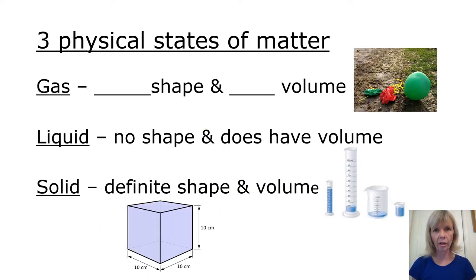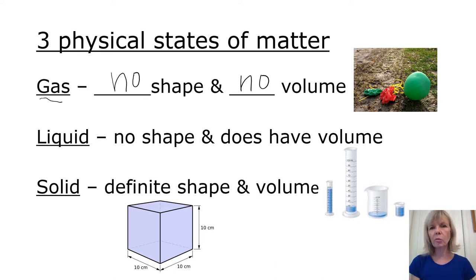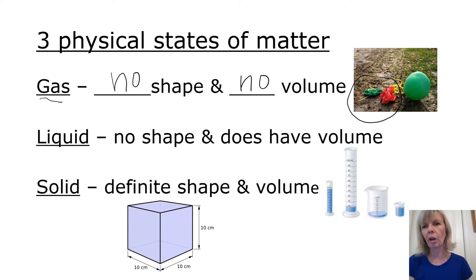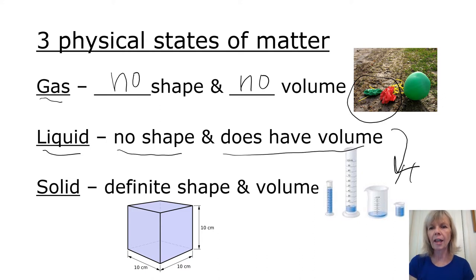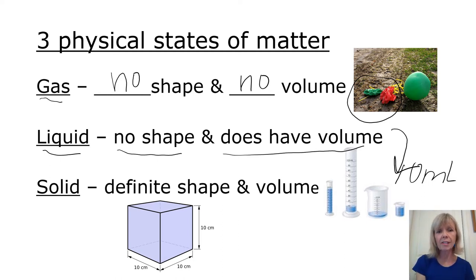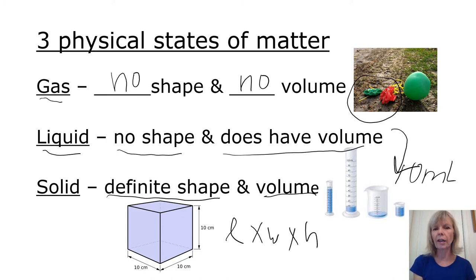Let's compare the shape and volume for our three states of matter. A gas has no fixed shape and no fixed volume — it takes the shape and volume of its container. For example, blowing air into a balloon causes the balloon to take that shape. A liquid does not have a specific shape either, but it does have a specific volume. Containers of water all containing 10 milliliters have the same volume but different shapes based on their container. A solid has a definite shape and volume. We could measure the volume of a cube by taking length times width times height — for example, 10 centimeters on each side.